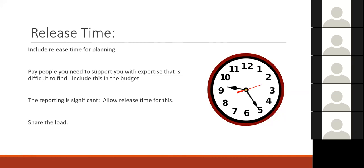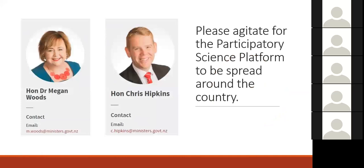Share the load — get other people in your school or community to help. If you've got a local branch of the Royal Society, ask them whether they've got someone who could help. Diane also made a political point: agitate for the Participatory Science Platform to be spread around the country — it's been in only three areas for four years and it's time to share the love. She shared the email addresses of ministers Megan Woods and Chris Hipkins to encourage people to push for wider access.